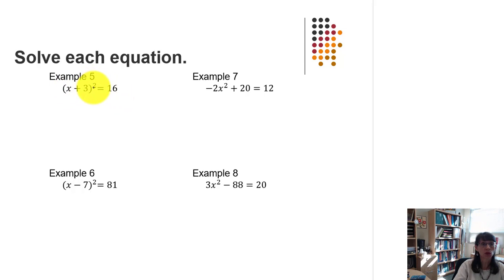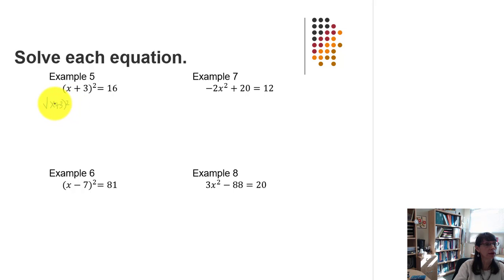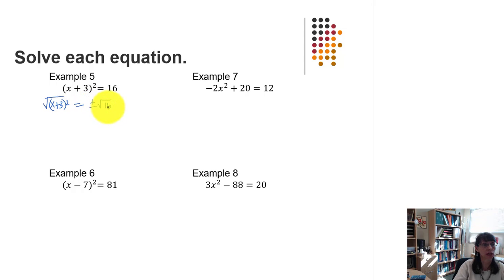To undo the squaring, we're going to take the square root of each side of the equation. That looks like the square root of the quantity squared equals plus or minus the square root of 16. It's important that we write both the positive and negative square root of 16 — we have to consider both cases.